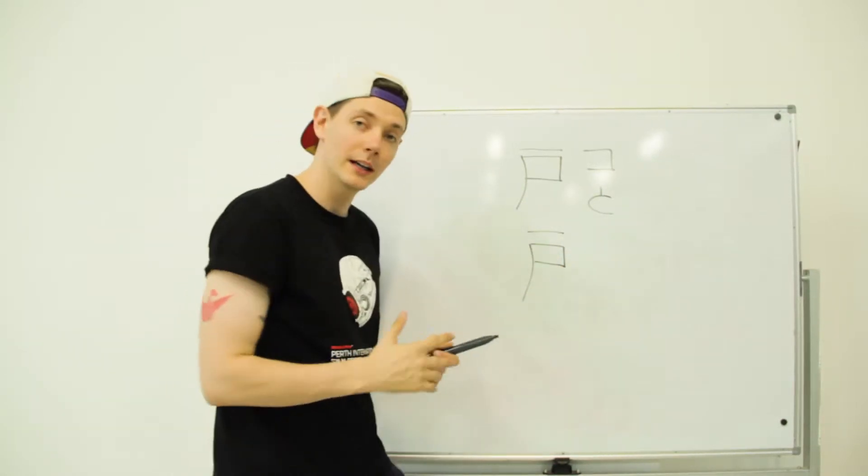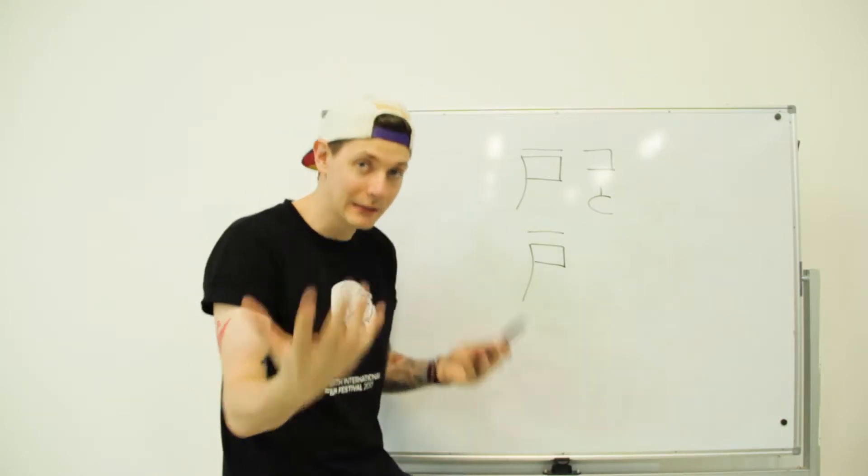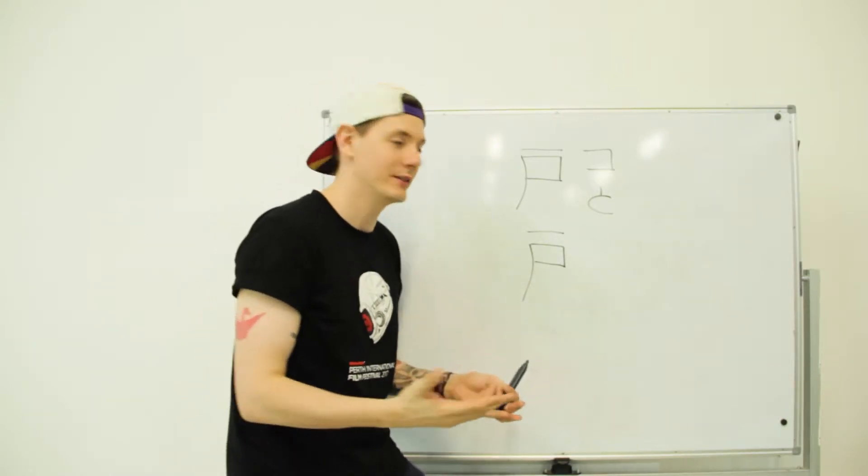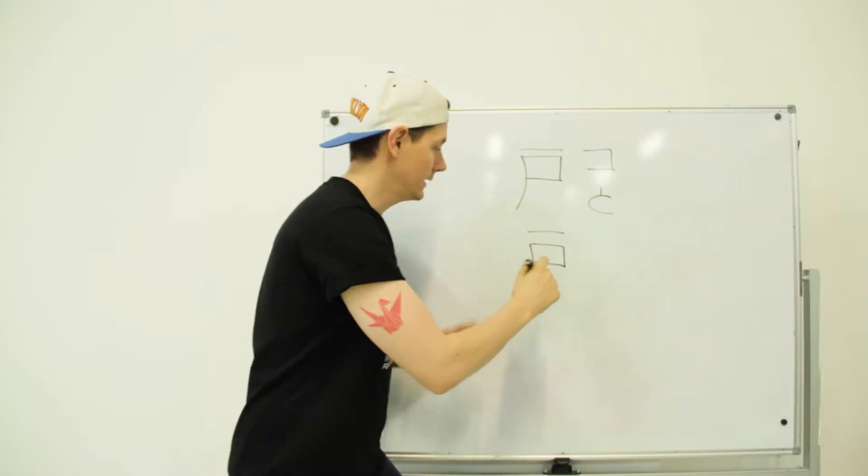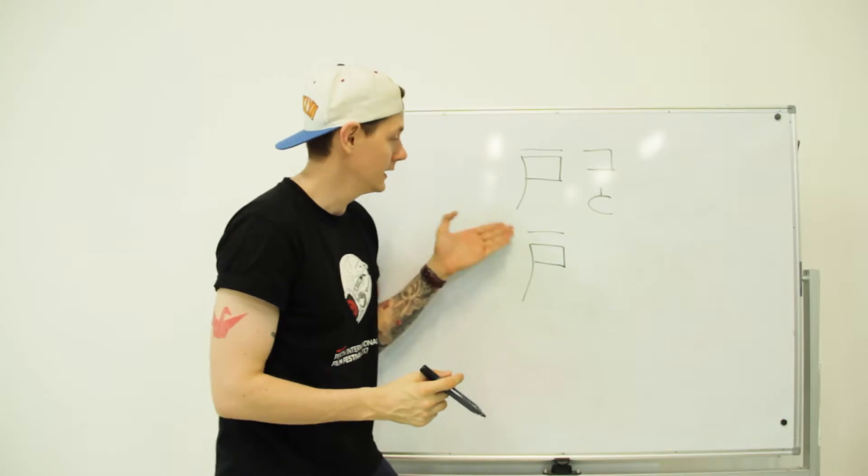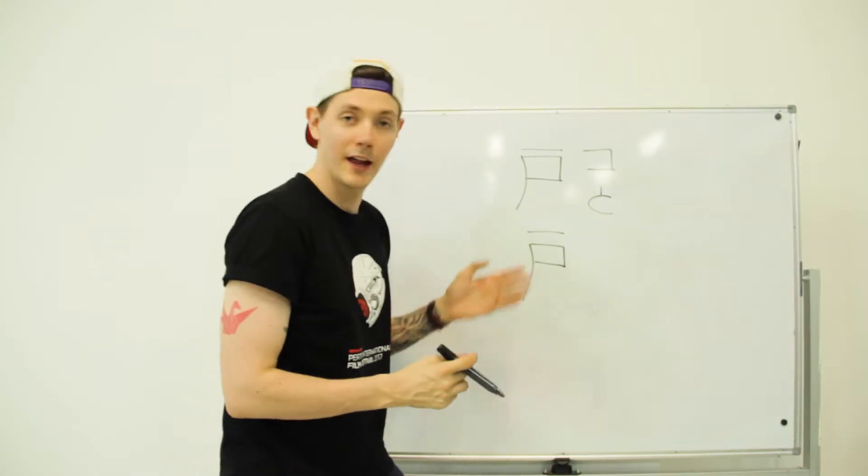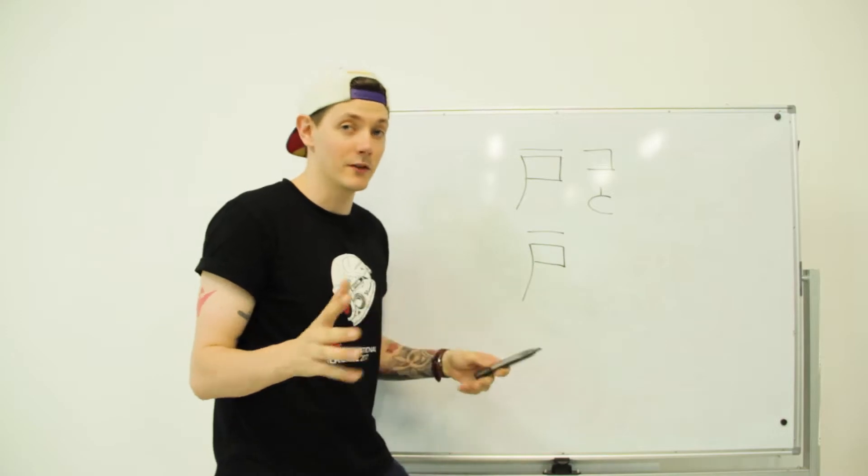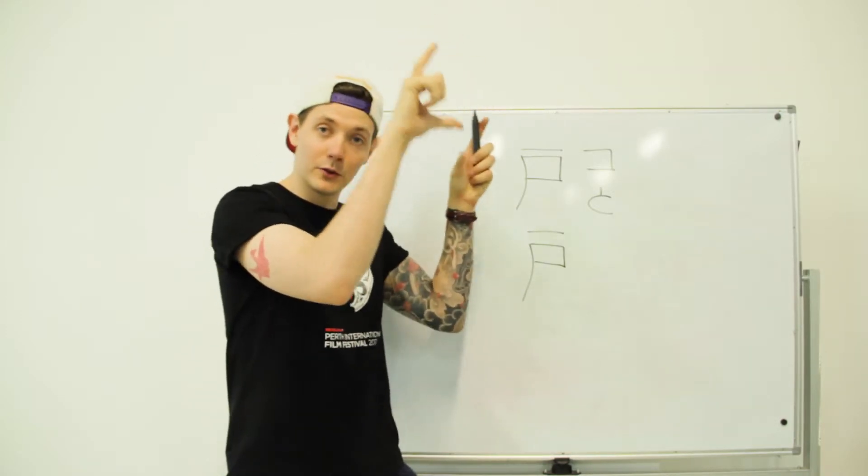To remember this, Wanikani has some suggestions about radicals. Wanikani, again, I refer to it in every video. The bottom part looks very much like a flag, which you can see the shape, it's very similar. The top part is one, so your number one flag, then maybe your country's flag, your favourite sports team's flag, whatever it might be. Imagine that above your door.